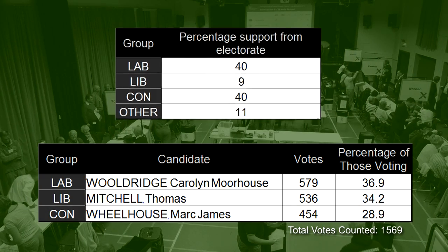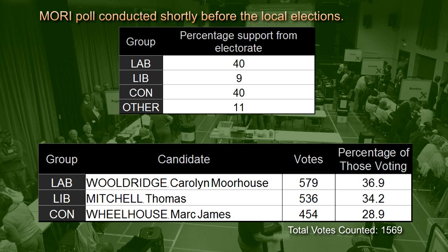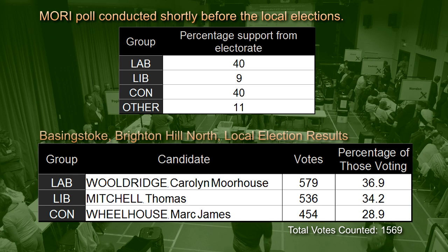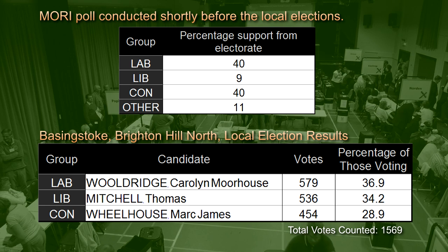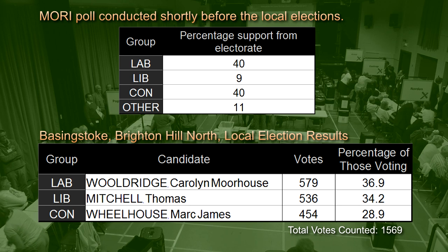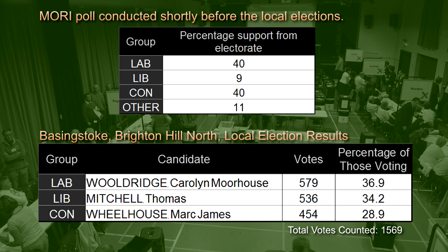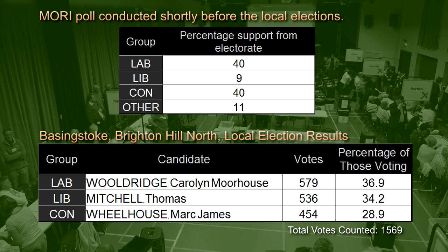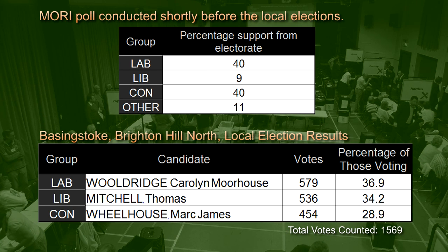We have two tables of data. The first is a national opinion poll taken very close to the local elections; the second is the result in Brighton Hill, Basingstoke. The results are somewhat different. The main reasons: first, Brighton Hill is not representative of the national picture. Second, people may have changed their minds between being polled and voting. Third, some who said they'd support a particular party may not have wanted to support a particular local candidate, or vice versa. Finally, people may not have bothered to vote at all, even though they said they would.